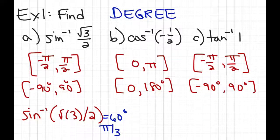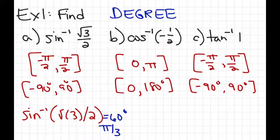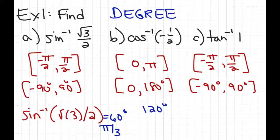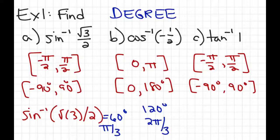For part B, the inverse cosine of negative 1/2 — remember, it's going to give you some answer between 0 and 180, so don't be surprised. In degree mode, the calculator tells you the answer is 120 degrees, which in radians is 2 pi over 3. For part C, the inverse tangent of 1 gives you 45 degrees, which is pi over 4.